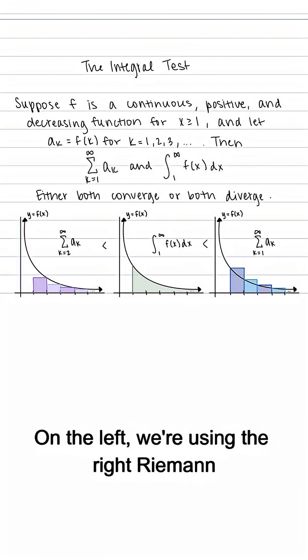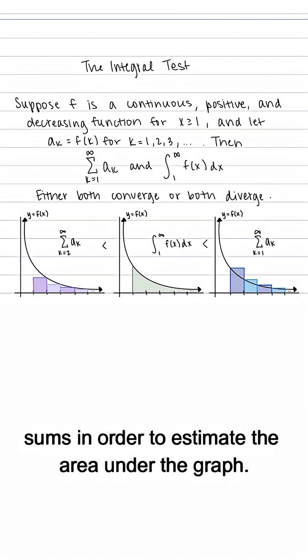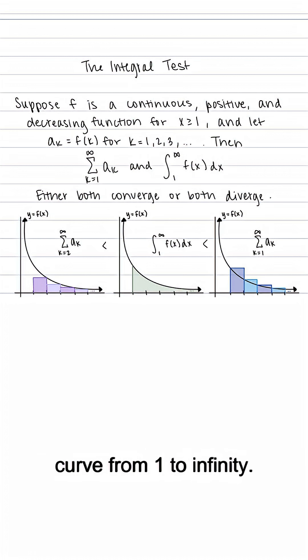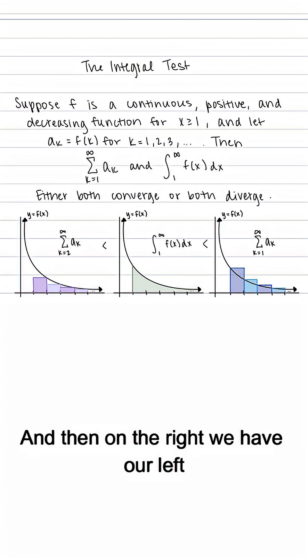On the left we are using the right Riemann sums to estimate the area under the graph, so we have the sum from k equals 2 to infinity of our terms. In the middle we have our actual integral which finds the actual area underneath the curve from 1 to infinity. And then on the right we have our left Riemann sums, so we have the sum from k equals 1 to infinity of a_k.